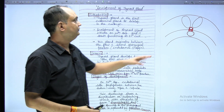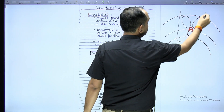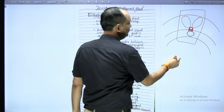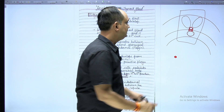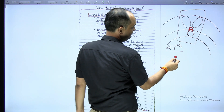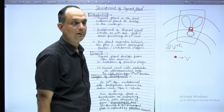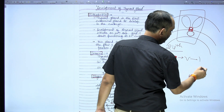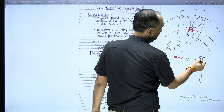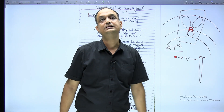What is the foramen cecum? In the tongue, in this area of the primitive pharynx or developing tongue, first there is a formation of a thickening known as the primordium thyroid. This primordium thyroid appears on the 24th day, and from this primordial thyroid there is a formation of a depression known as a diverticulum. This diverticulum later elongates in the downward direction. The opening of this diverticulum into the developing pharynx or tongue persists as the foramen cecum.